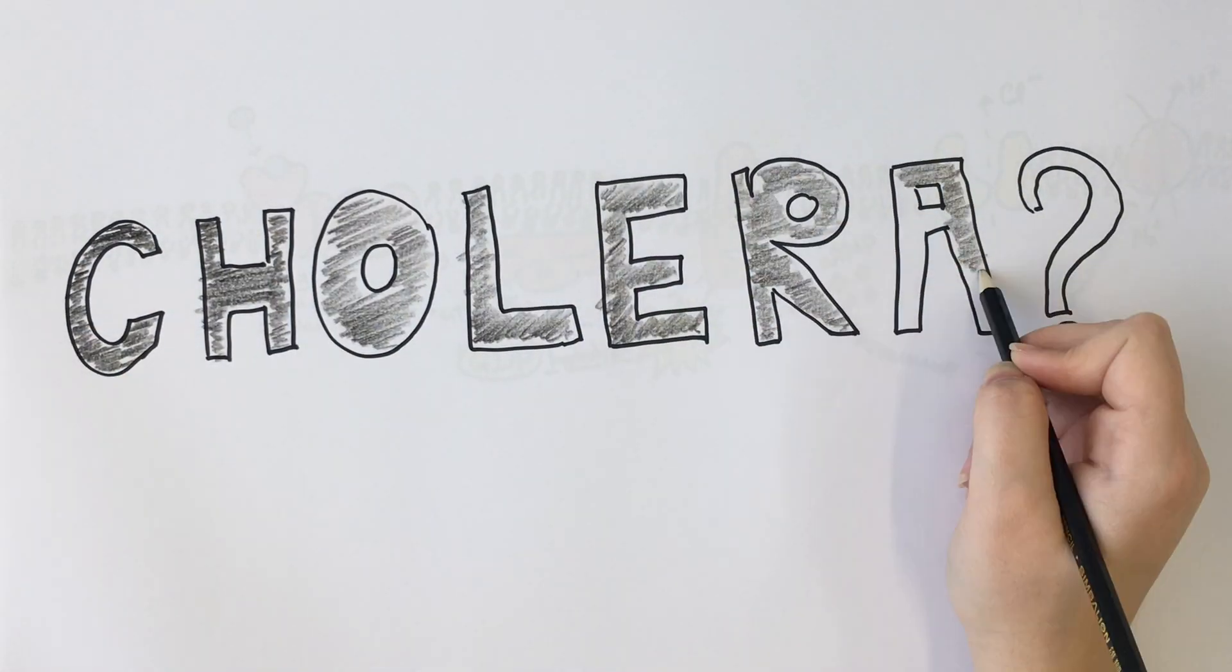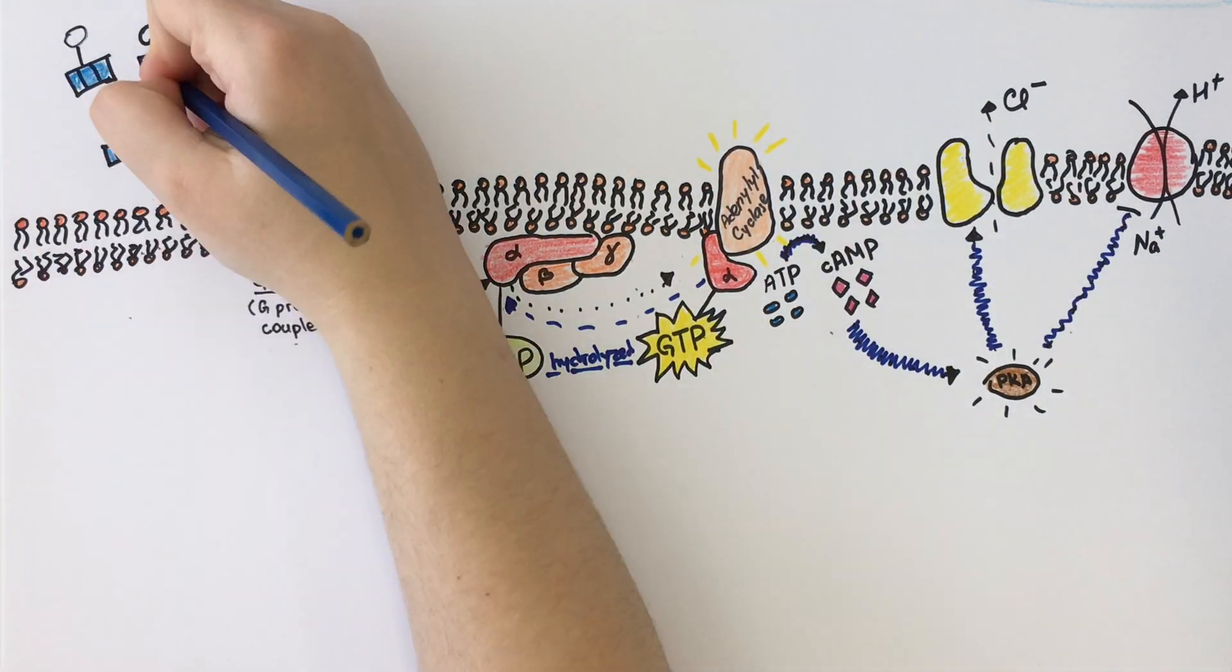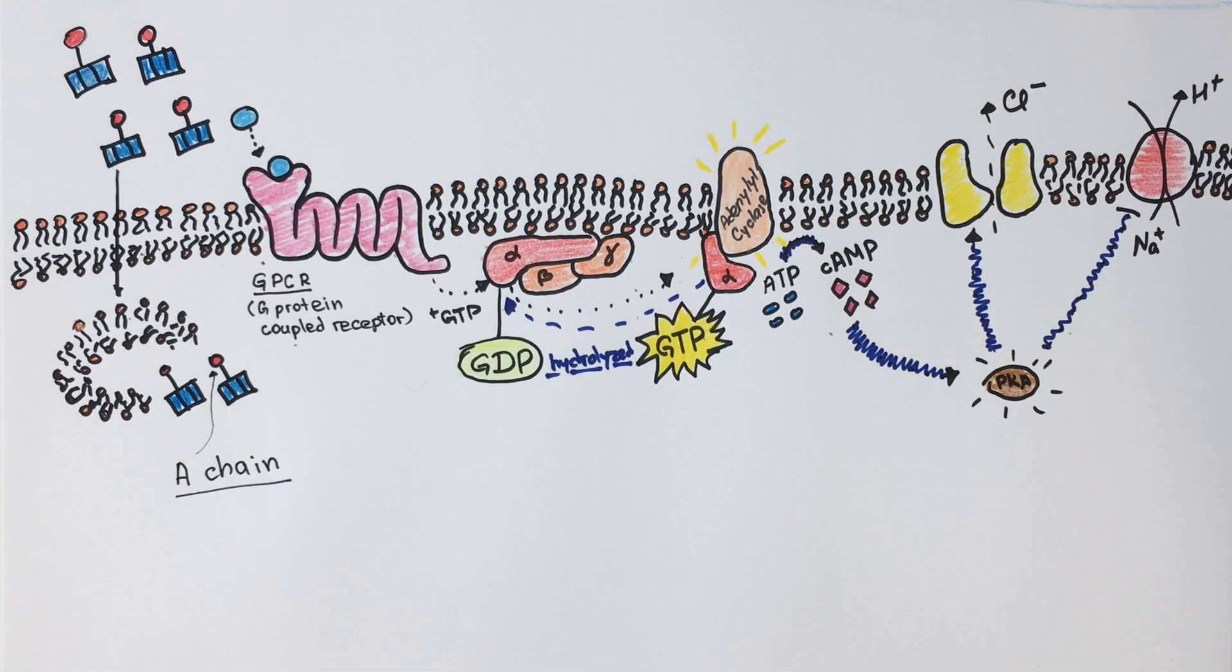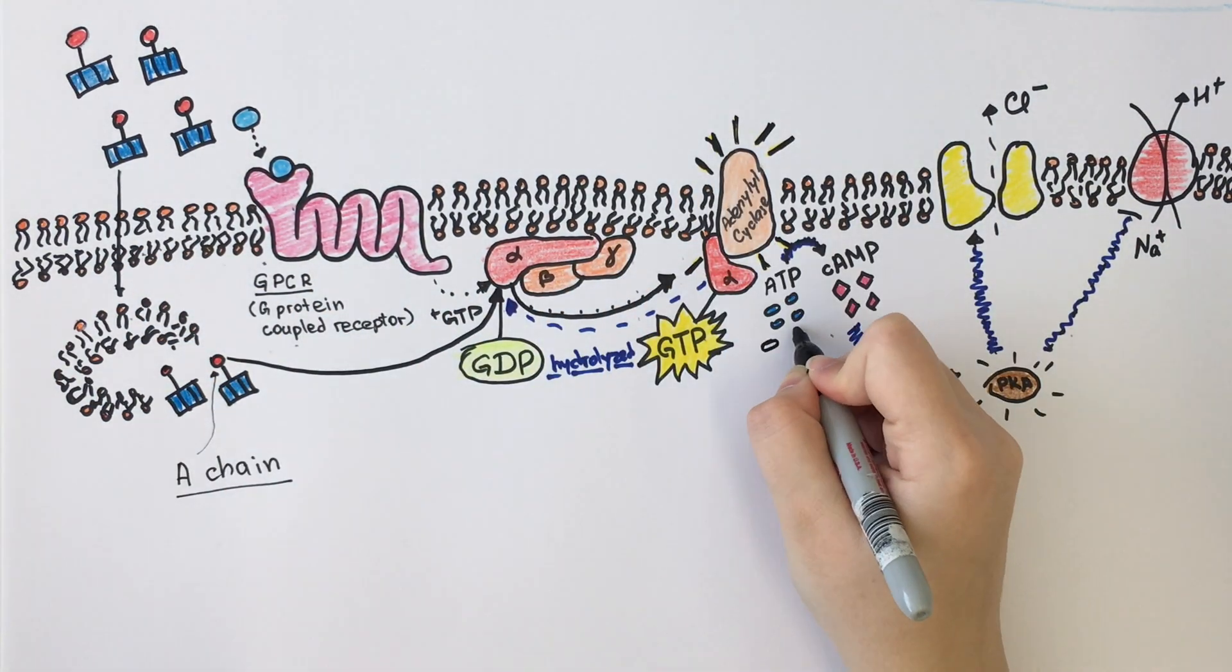So what does this have to do with cholera? The catalytic A chain of the cholera toxin covalently modifies the G-protein and traps it in its active state. This leads to constant activation of the pathway.